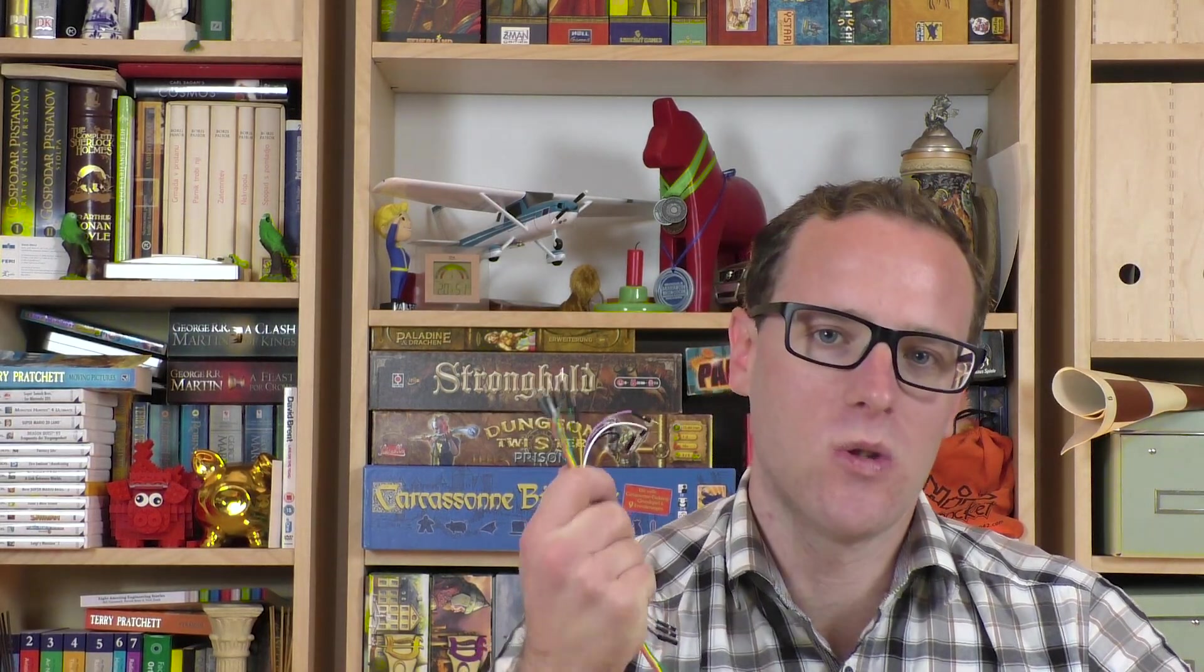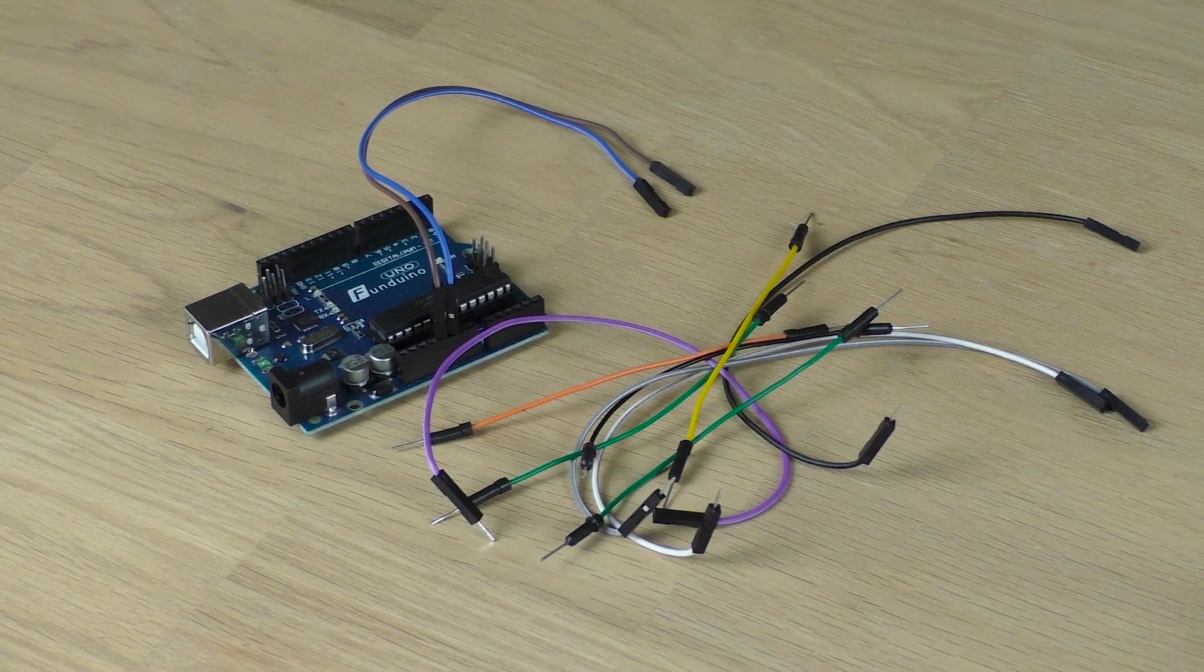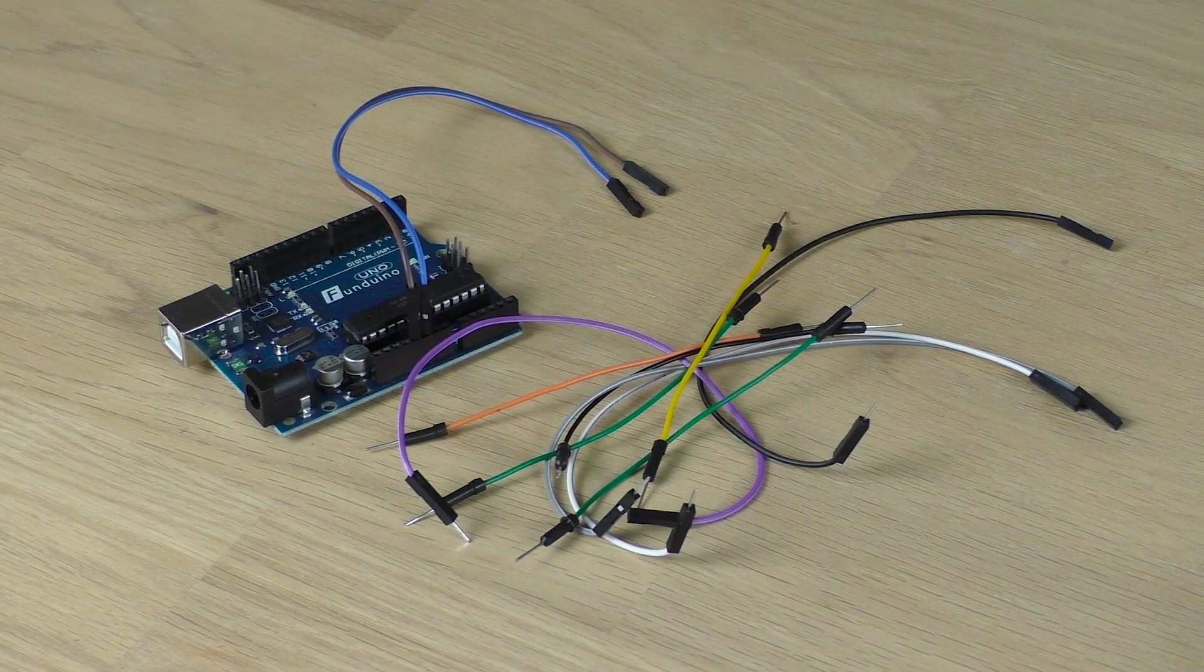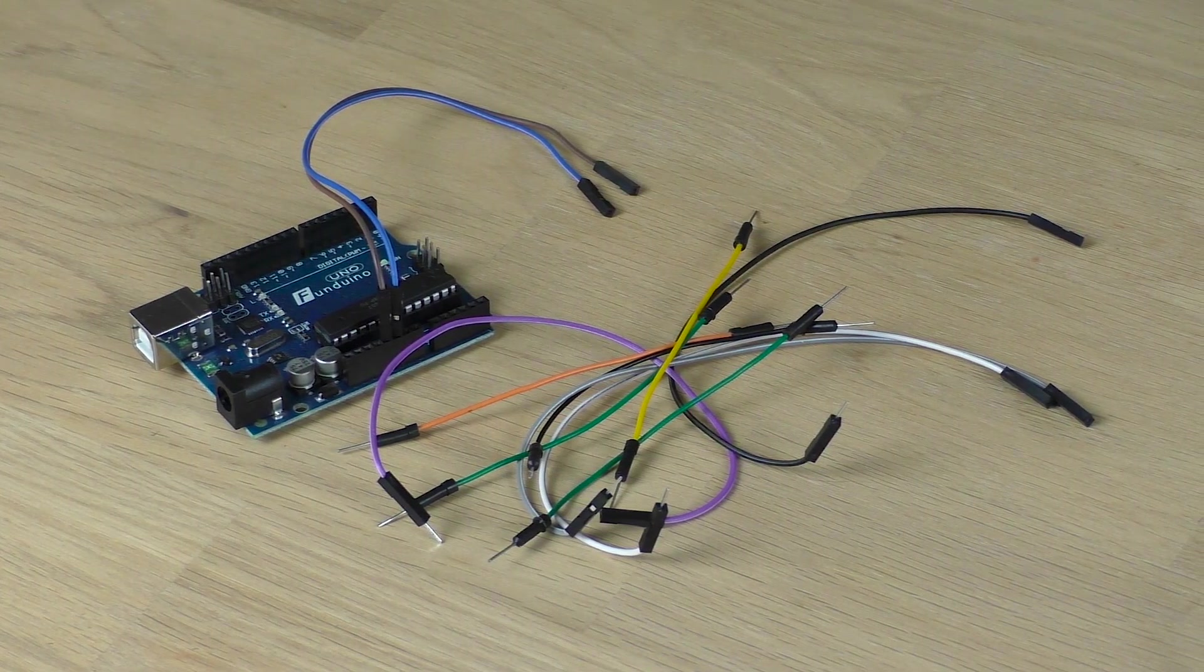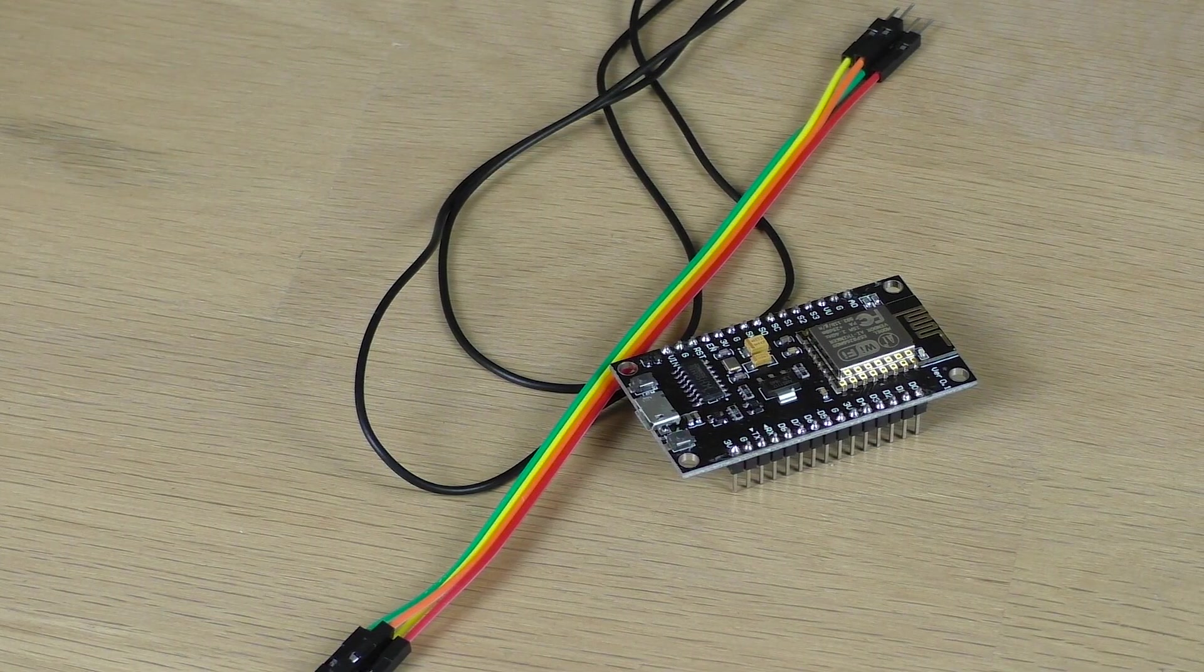No matter what project you're working on, you'll eventually have to connect some wires together. There are a few different ways to connect small wire. Some require only a bit of duct tape and you'll need special tools for others. I'll show you six different methods, one of which allows you to easily detach the wires in the future.